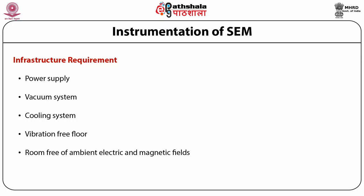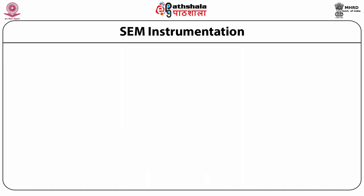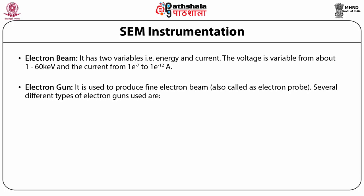The room must be free of ambient electrical and magnetic fields. Scanning electron microscopy instrumentation: let us now discuss the description of each component. This figure shows the schematic of a SEM. The electron beam has two variables: energy and current. The voltage is variable from about 1 to 60 keV and the current from 1×10⁻⁷ to 1×10⁻¹² amperes. These values are specific to the instrument model. The second component is the electron gun, which is used to produce a fine electron beam called an electron probe.